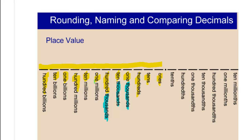Then we're dealing with millions: 1,000,000, 10,000,000, 100,000,000. And then we're dealing with billions and after that is trillions. What you really need to memorize is ones, tens, hundreds, then thousands, millions, billions, trillions. It goes on after that, but that's certainly enough information.